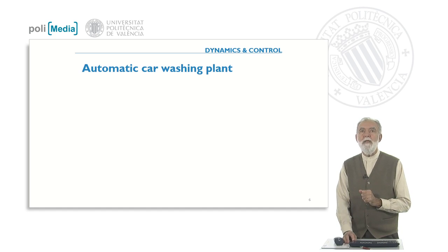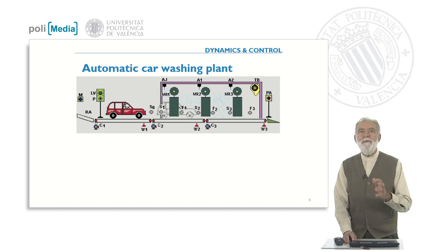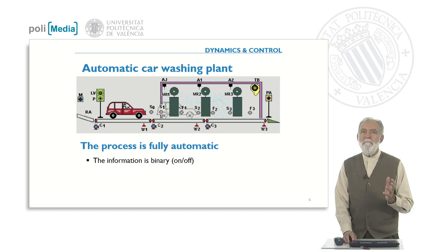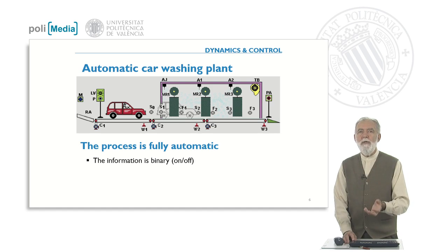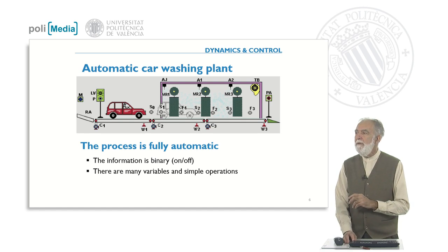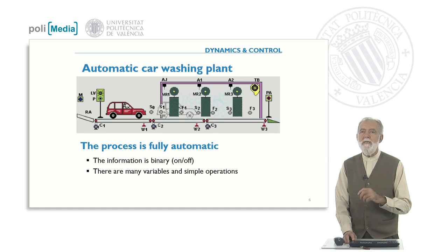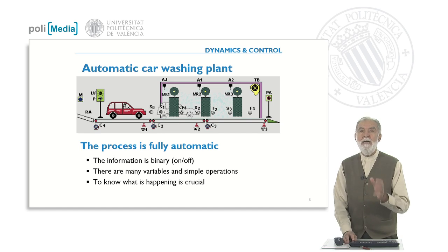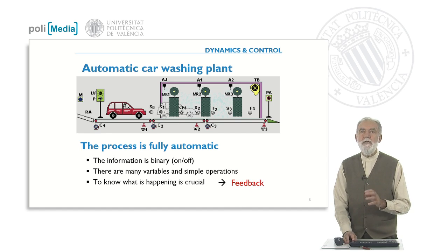Now consider something more familiar in automation: a car washing plant. When we enter, we put a token at the entrance and everything runs automatically. There are many variables, but the information is mainly binary — on/off: we are stopped or moving, the water is flowing or cut, the dryers are on or off, the belts are moving or stopped. Knowing where the car is and whether it has been washed yet is fundamental, so feedback is very important to ultimately get a clean car. The signals here are simple and mostly binary.